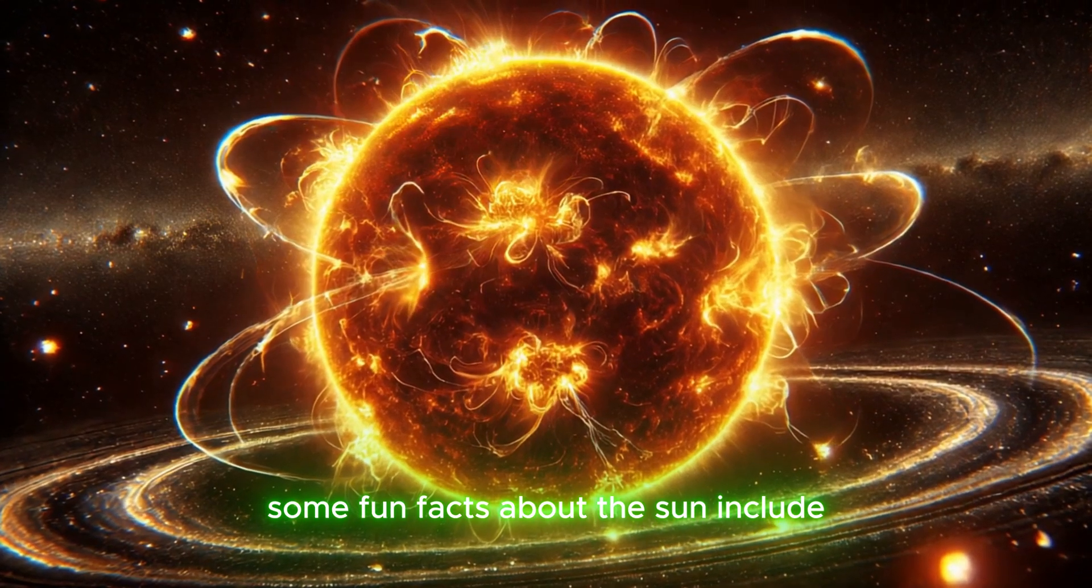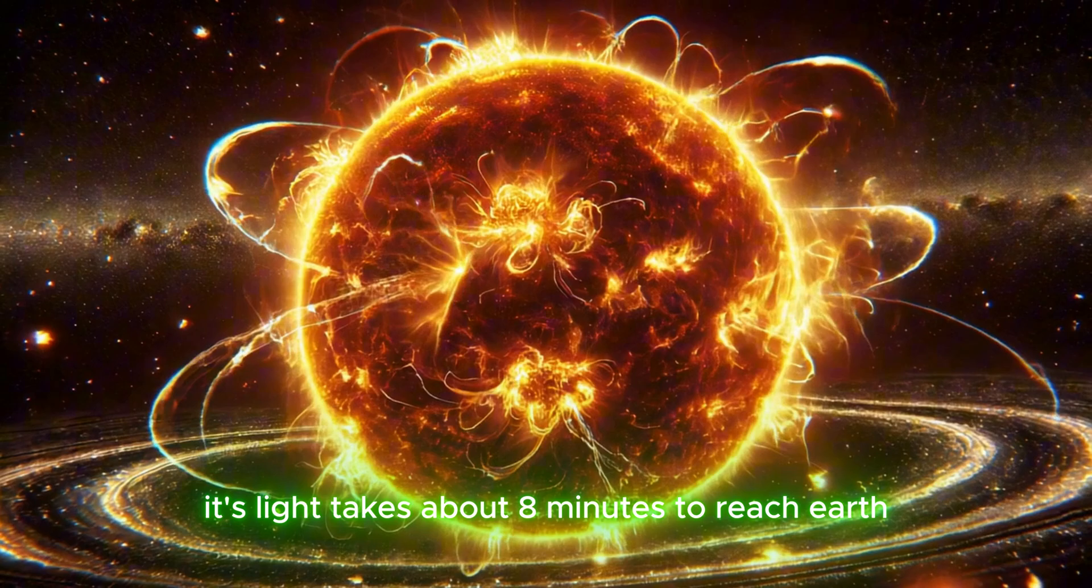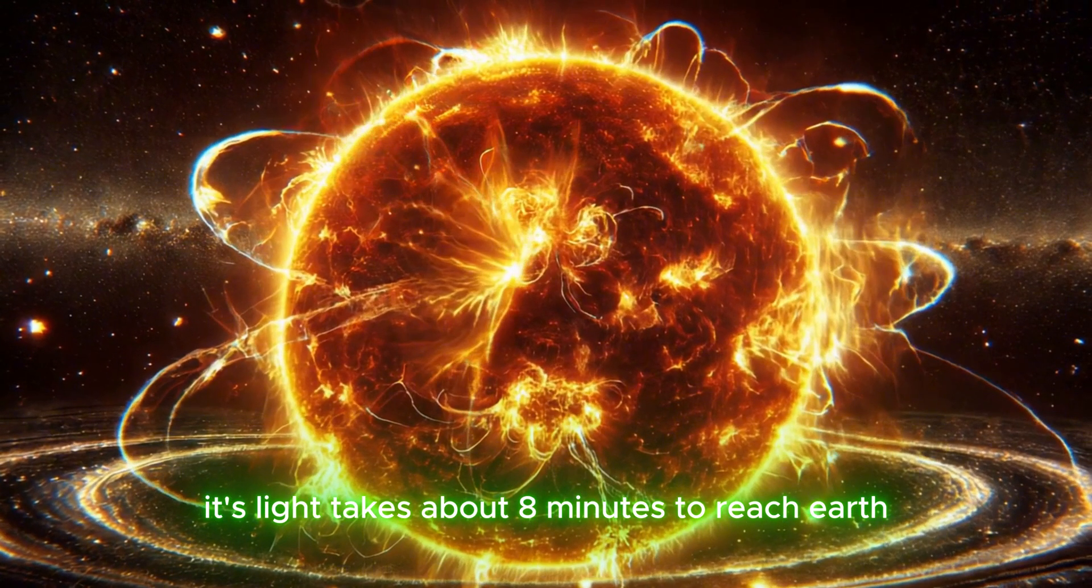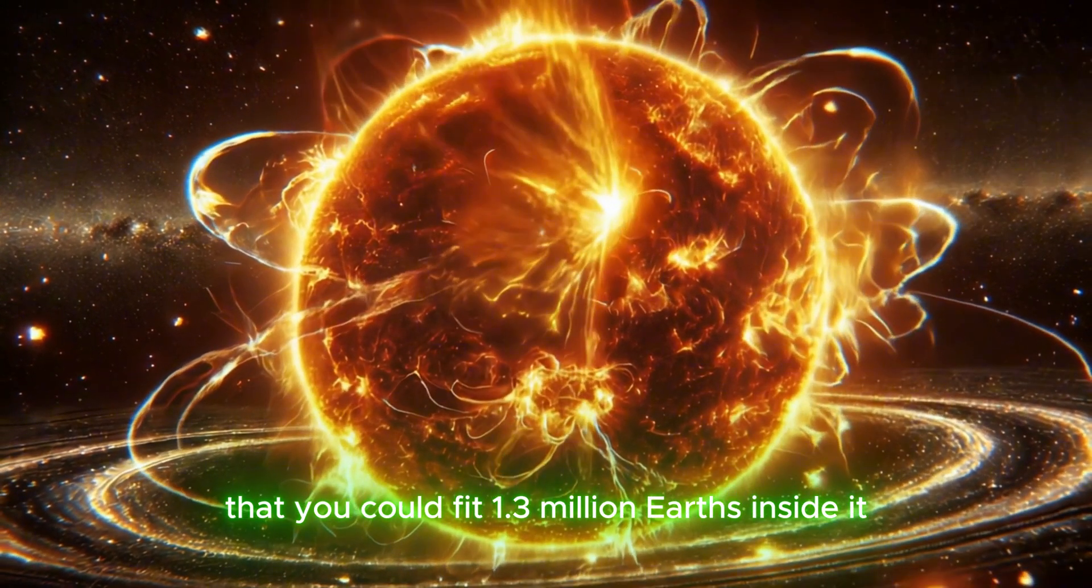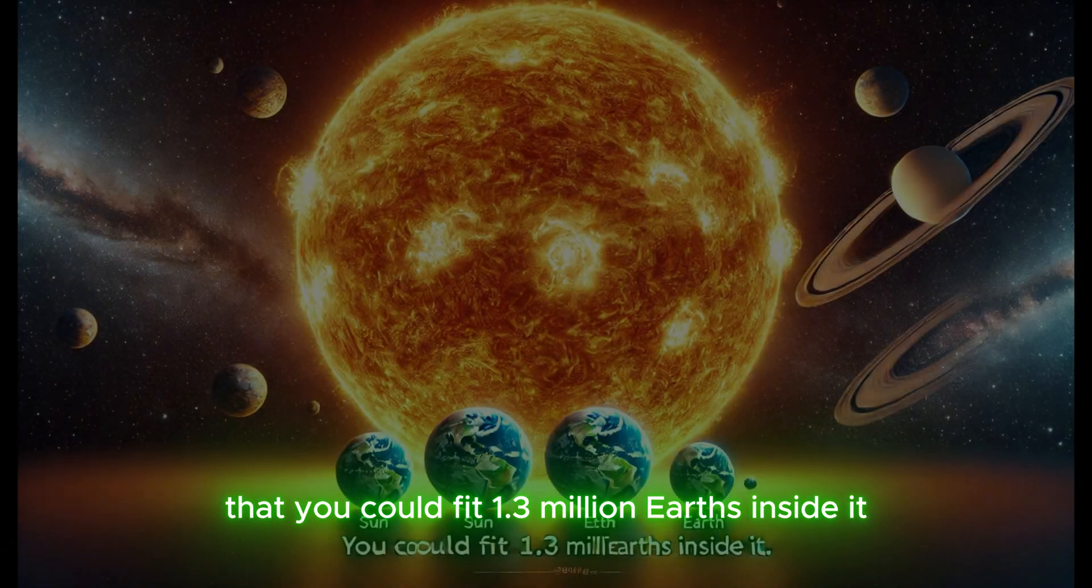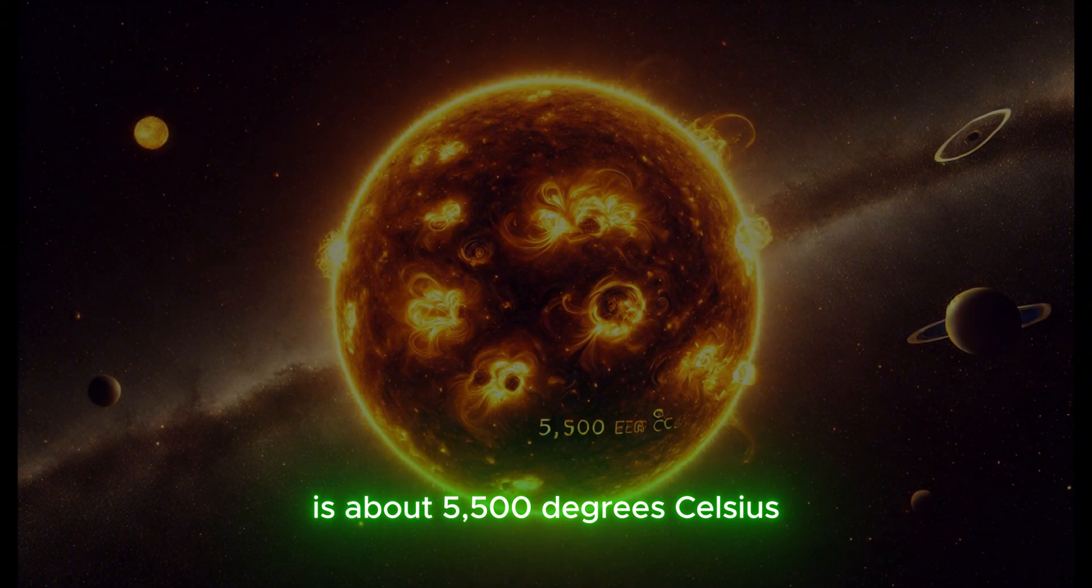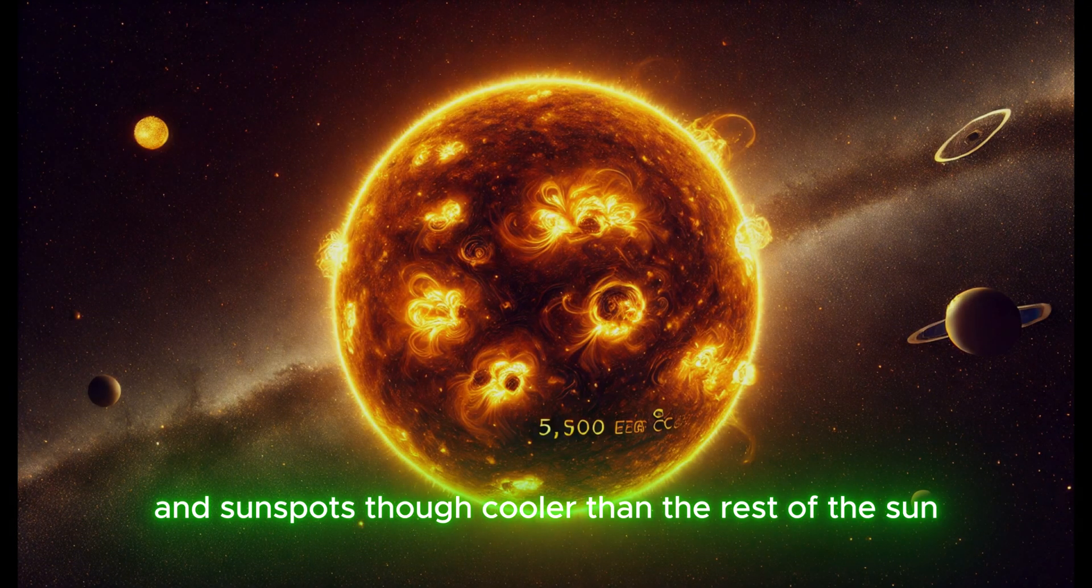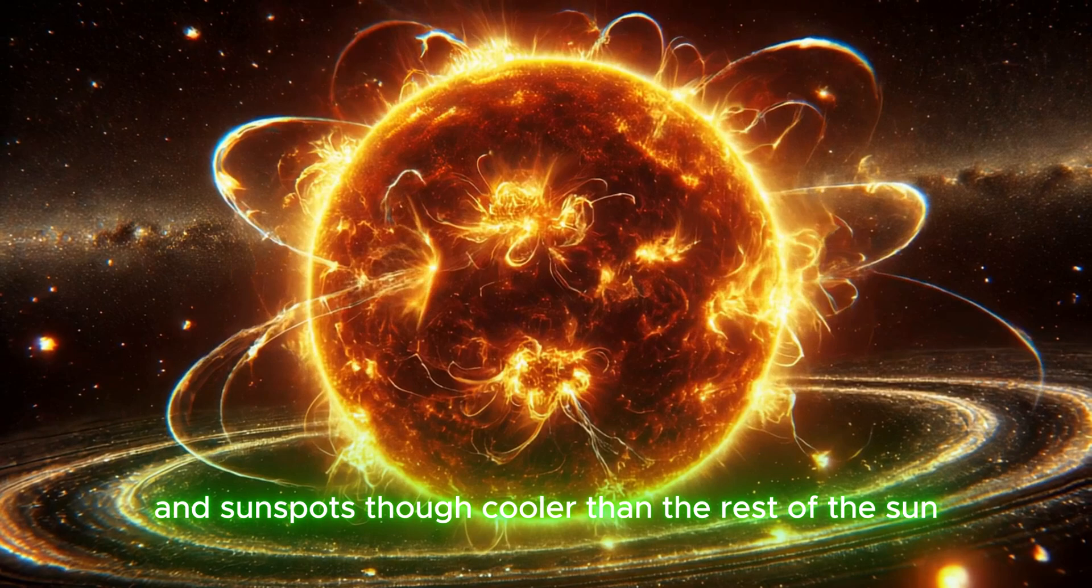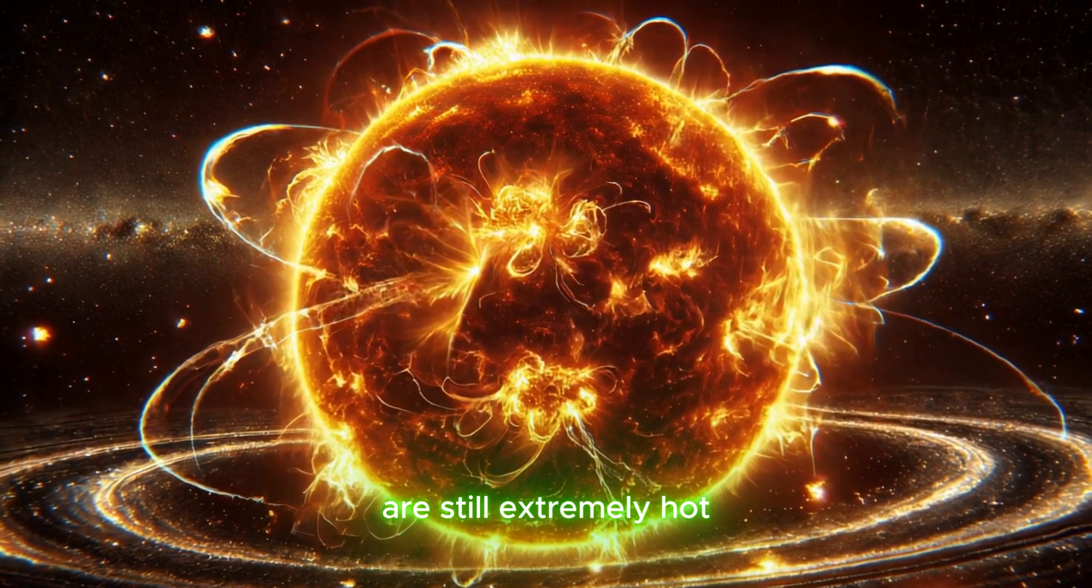Some fun facts about the sun include: its light takes about 8 minutes to reach Earth. The sun is so big that you could fit 1.3 million Earths inside it. The surface temperature of the sun is about 5,500 degrees Celsius, and sunspots, though cooler than the rest of the sun, are still extremely hot.